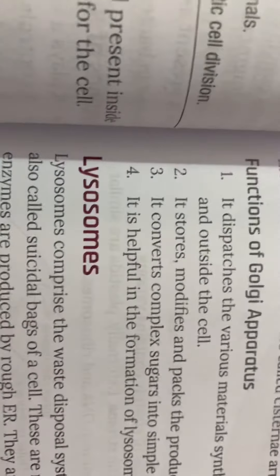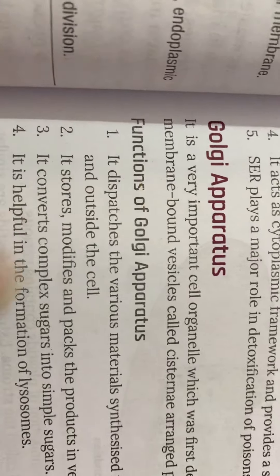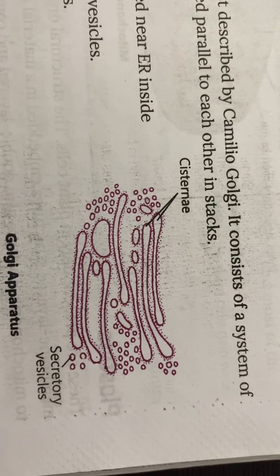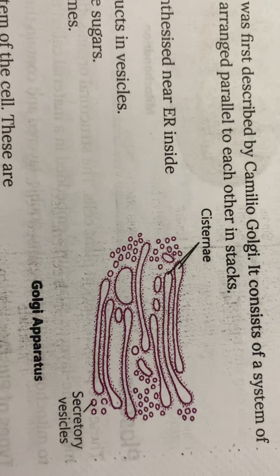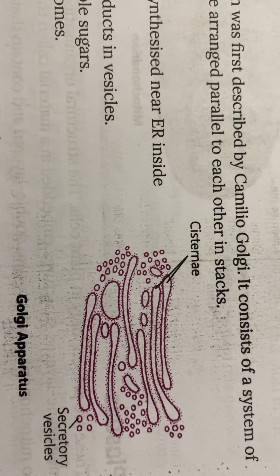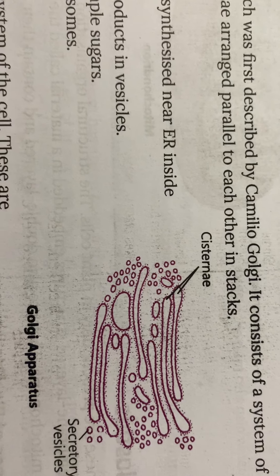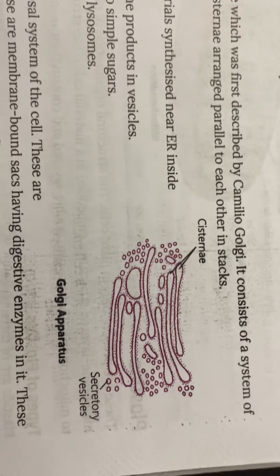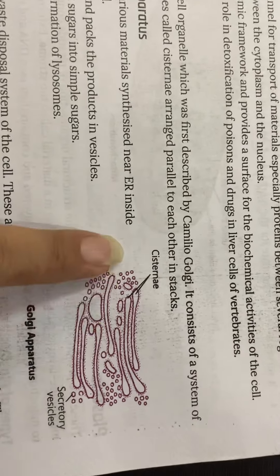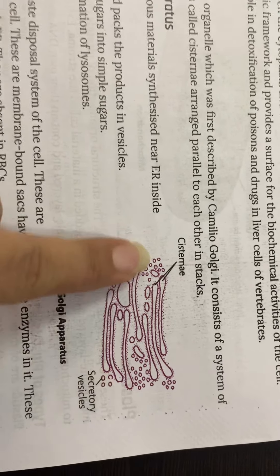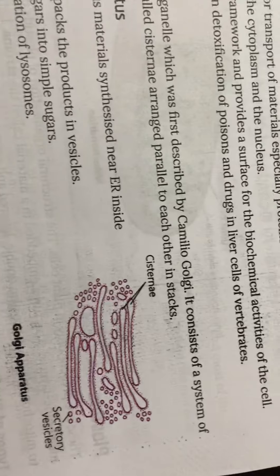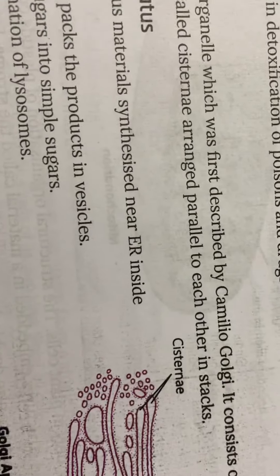The next cell organelle is the Golgi apparatus. It looks like this. It is a very important cell organelle, first described by Camillo Golgi. It consists of a system of membrane-bound vesicles, and cisternae are present on it, arranged parallel to each other.